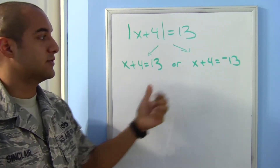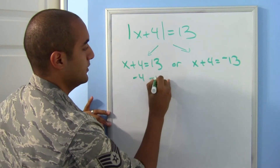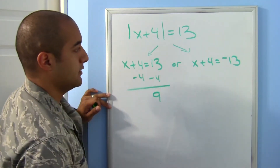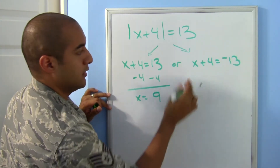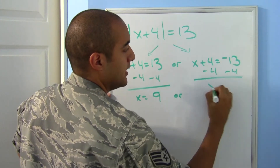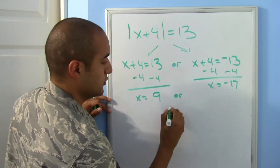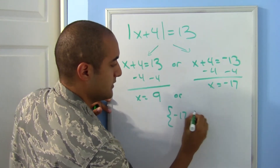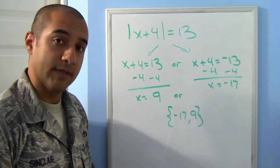Now we just solve each one. Subtract 4: x equals 9. On the other side, subtract 4: x equals negative 17. Our solution set is {negative 17, 9}.